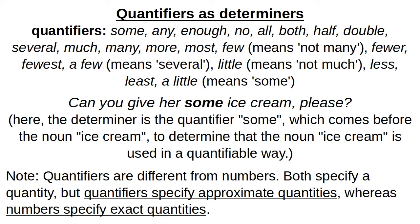For example: 'can you give her some ice cream, please?' Here the determiner is 'some,' and it comes before the noun 'ice cream,' which is used in a quantifiable way. Quantifiers specify a quantity but are different from numbers — quantifiers provide approximate amounts, whereas numbers provide an exact amount.